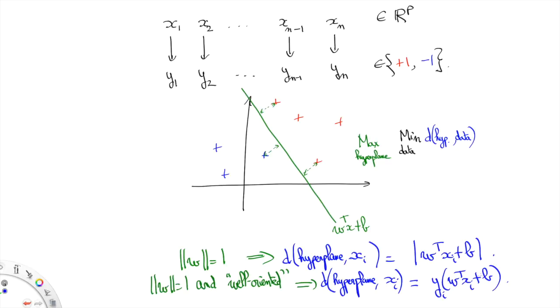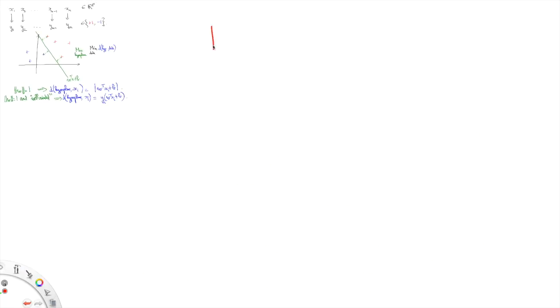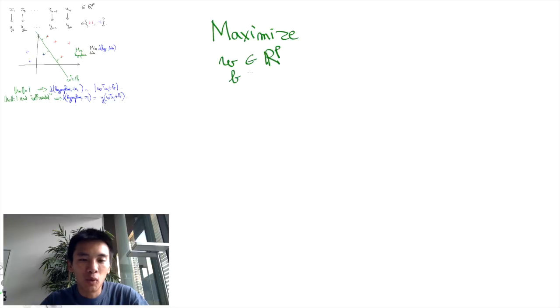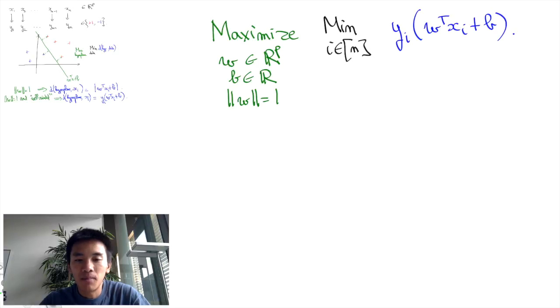This leads us to the following maximization problem to determine the most separating hyperplane. We are going to maximize over W and B the minimum over I of YI times W transpose XI plus B.